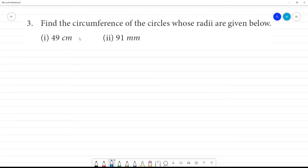Find the circumference of the circles whose radii are given below. Okay, so now we can go to the radius. First one: radius is equal to 49 centimeter. Then that is 2πr.